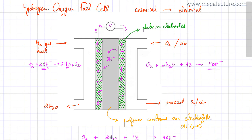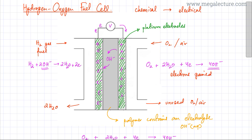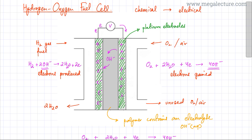For O-level students, you don't need to go into a lot of detail for the hydrogen-oxygen fuel cell. What you need to know is that there are two reactions: on the right-hand electrode, oxygen contacts water and gains electrons to produce 4OH⁻, while on the left-hand electrode, hydrogen loses or produces electrons. One electrode gains electrons and the other produces electrons.